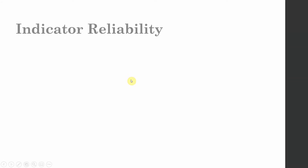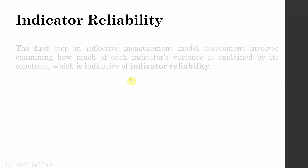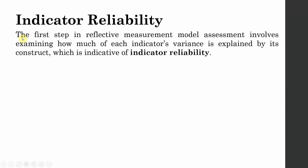How do you assess indicator reliability? The first step in reflective measurement model assessment involves examining how much each indicator's variance is explained by its construct, and this is called indicator reliability.